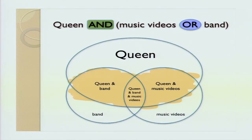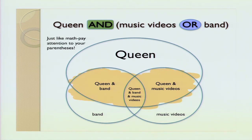The next symbol is parentheses. Parentheses can help you group your Boolean operators together. So, for example, Queen AND (music videos OR band) will find pages that all mention Queen, but they might either mention just band, just music videos, or both. The thing about parentheses is you have to pay attention to their placement — if you put them in the wrong place, just like math, you're going to get results that are unexpected.